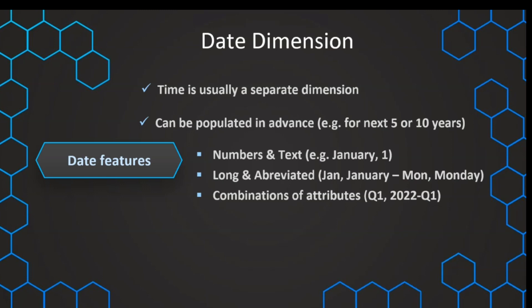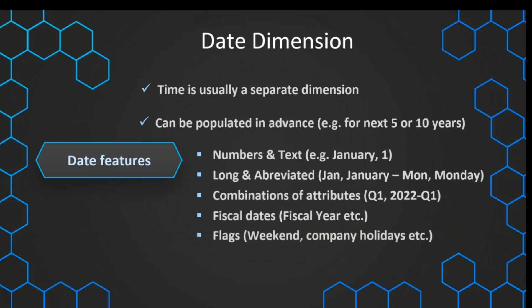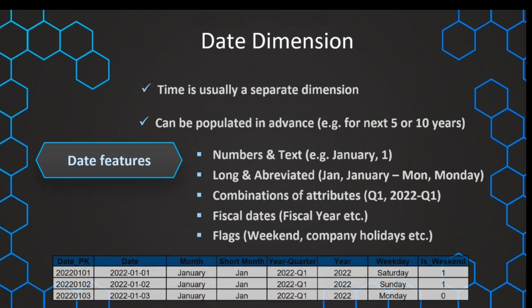We should include both long and abbreviated names, depending on the business use case. We can also include combinations of attributes, such as '2022 Q1', making it easier for end users to group data. Additionally, we can populate fiscal dates like the fiscal year, and flags — for example, indicating whether a day is a weekend or a holiday.